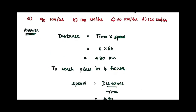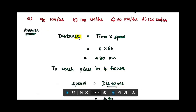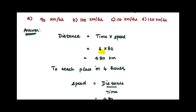First we need to find the distance. Distance equals speed multiplied by time. Substituting the values, the distance is 80 × 6 = 480 km.